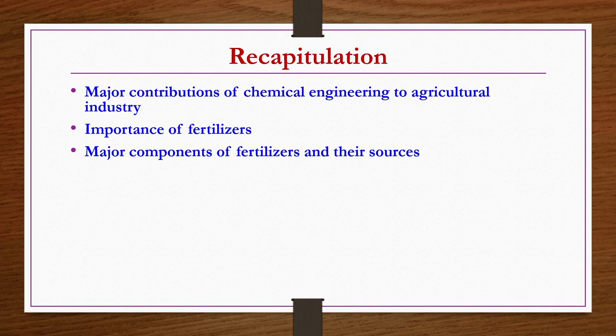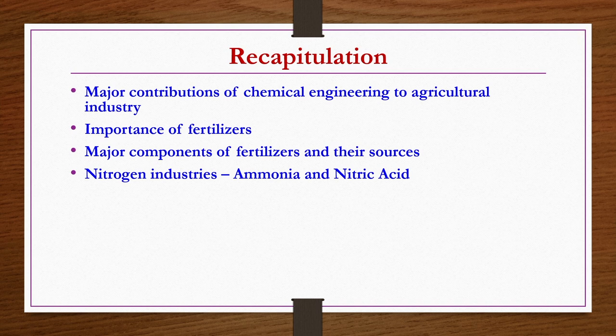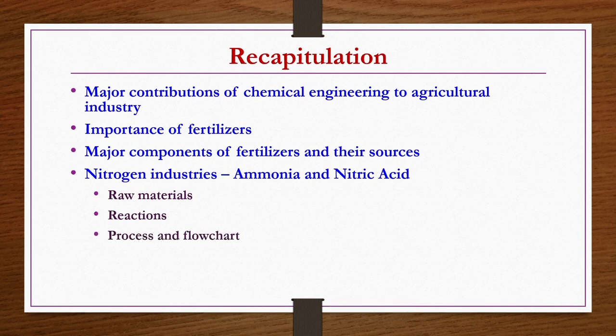Chemical engineers have given enormous contributions to the agriculture industry, where we realize that fertilizers are one component whose production is not possible without chemical engineers. We started discussing fertilizers — their importance, major components and sources — then moved to nitrogenous fertilizer industries, discussing production of ammonia in one lecture and nitric acid in another, covering raw materials, chemical reactions, process flowcharts, major engineering problems, and end uses.